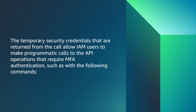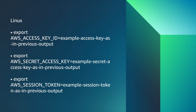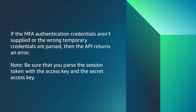The temporary security credentials that are returned from the call allow IAM users to make programmatic calls to the API operations that require MFA authentication, such as the following commands. If the MFA authentication credentials aren't supplied or the wrong temporary credentials are passed, then the API returns an error.